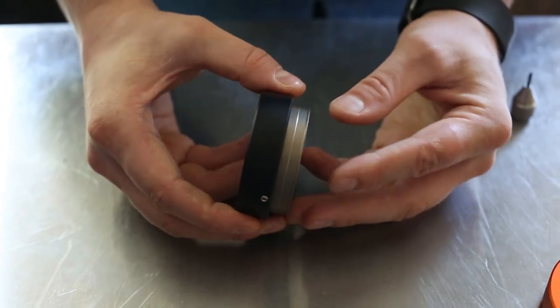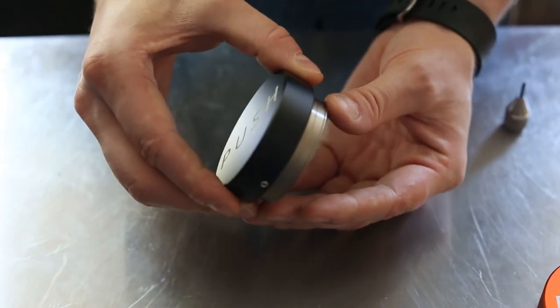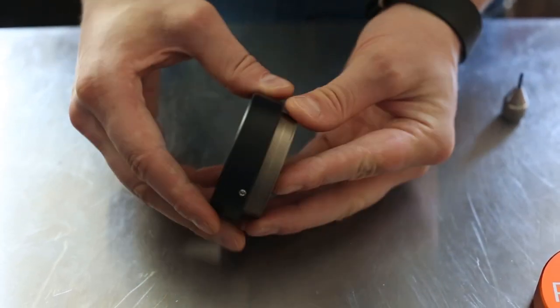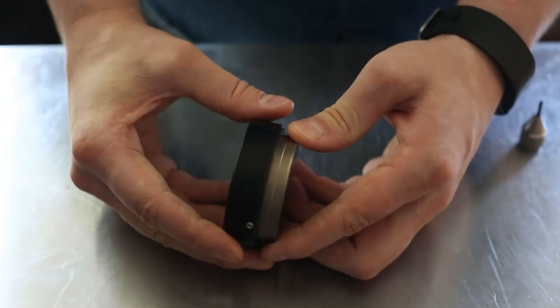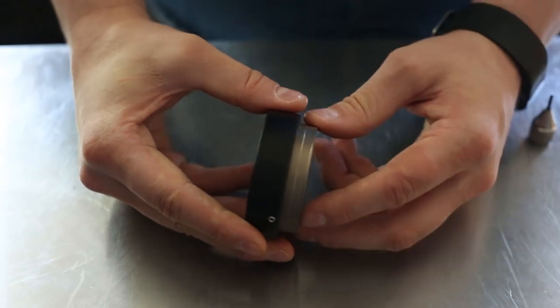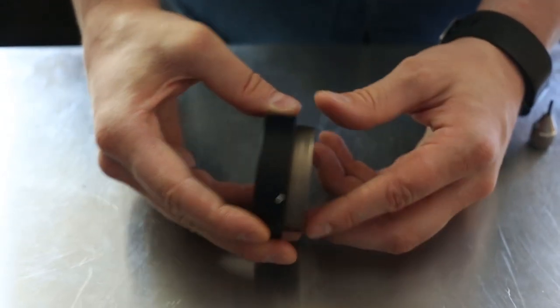It does a great job tamping edge to edge across the basket. You get a really even tamp all throughout the coffee's surface and nice clean sidewalls with no loose grounds around the edges.